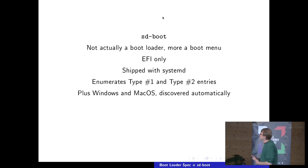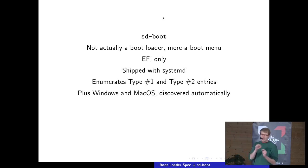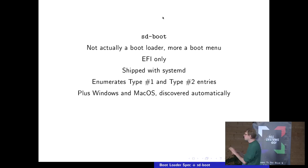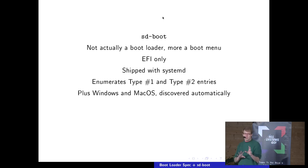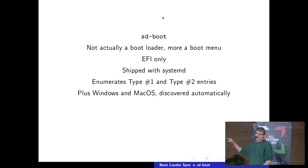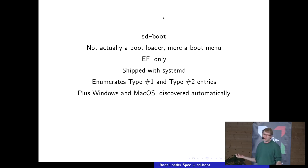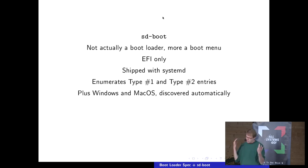SDboot also has a nifty feature where it automatically discovers Windows and macOS installations on the same hard disk. This is very different from how distributions did this with Grub, where you have a huge script that collects data to generate Linux entries and then probes all system partitions for Windows or macOS and generates some complicated script. With SDboot, during boot it just looks: is Windows installed? Is macOS installed? It adds menu entries automatically — zero configuration required.